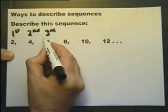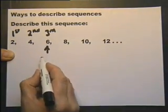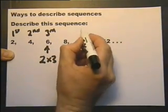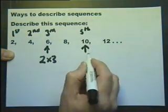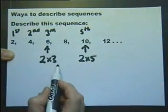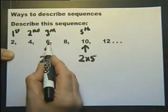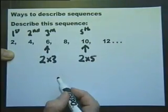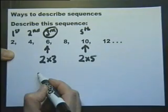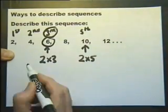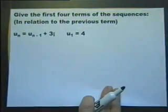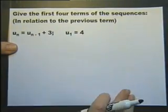If we call that the first term, this the second, this the third, and so on, we can spot that the third term six is two times three, the fifth term is two times five. So one way to describe this sequence is each term has two added to the previous term; the second way is that each position of a term multiplied by two gives you the term itself.